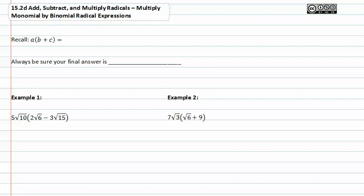Notice that a is in front of b plus c, and b plus c is grouped. We can distribute that a through with multiplication where a times b is ab and a times c is plus ac. Always be sure your final answer is simplified.